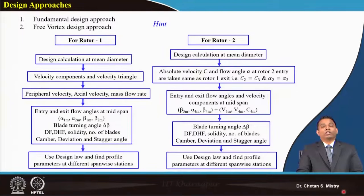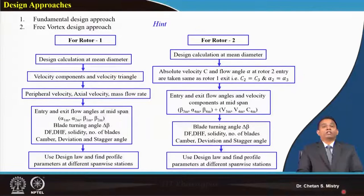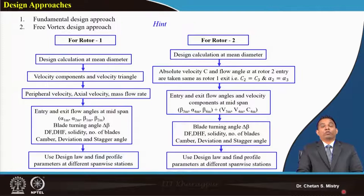For rotor two, as we discussed for a conventional stage, the absolute velocity coming out from the rotor enters the stator. In line with that, here we assume the absolute velocity coming out from rotor one will be entering rotor two. So we can say velocity C2 and velocity C3 are both the same, and absolute flow angle alpha2 equals alpha3. Based on this assumption we do our calculation at the mid station, then at different locations along the span to make the blade.